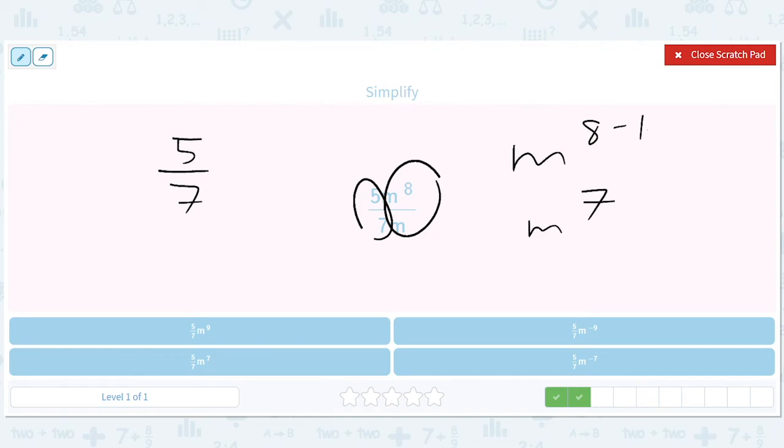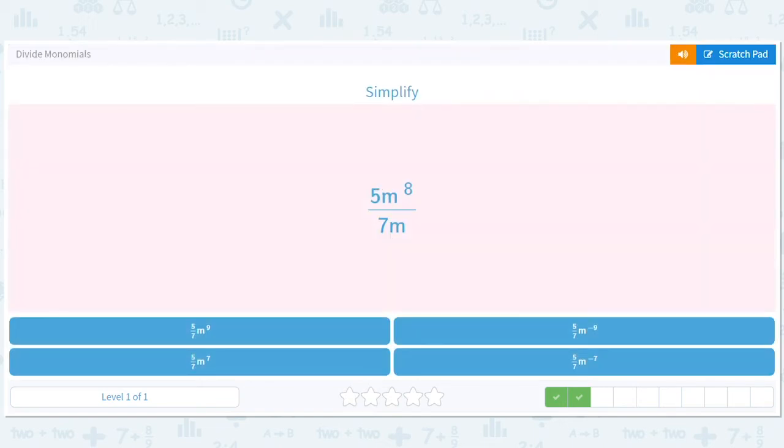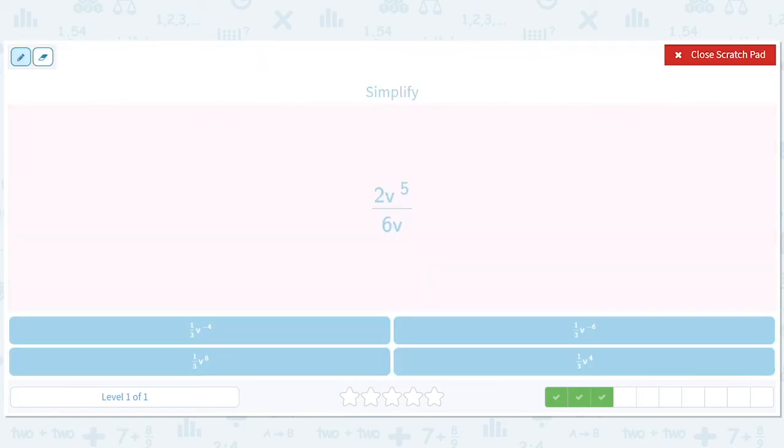So 5 sevenths, m to the 7th. Easy work. No improper fractions there. No improper fractions here either, because 2 over 6 is just 1 over 3.